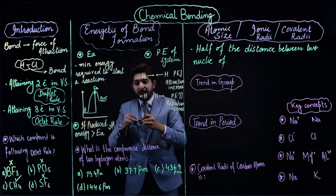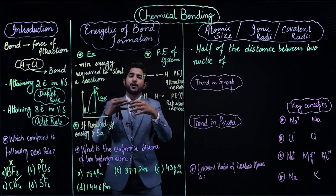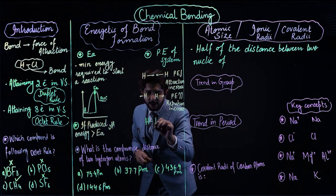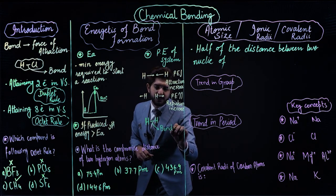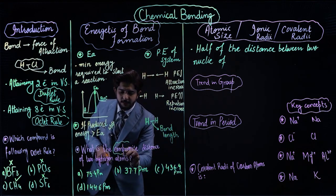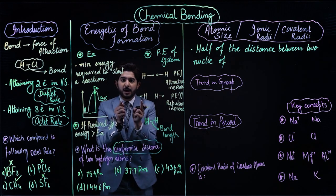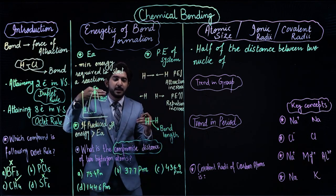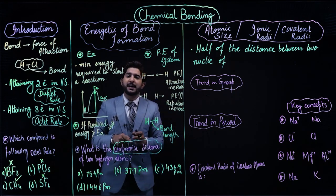If we want to make a stable molecule, the potential energy of the system must decrease. Between two hydrogen atoms, there is a compromise distance — where repulsive forces are not too strong and attractive forces are not too strong — but where a bond can form. This is called bond length — the distance between the two atoms — also known as the compromise distance.